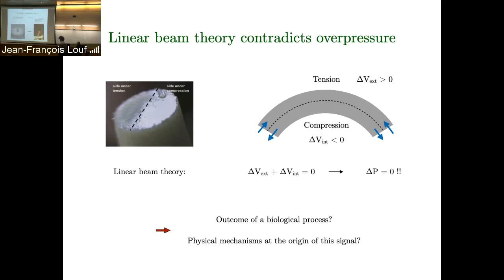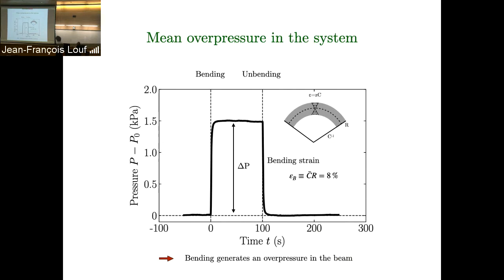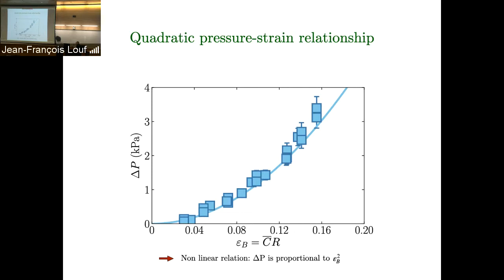A real tree branch is highly complicated — a highly structured material with multiple scales and channels. Our first approximation is a cylindrical beam perforated with longitudinal channels, filled with a Newtonian fluid. We made it of PDMS, so it's transparent and elastic. When we bend this artificial beam, we immediately see an increase in pressure that is steady and then returns to zero when unbent. We define the bending strain epsilon_b as curvature times the radius. Remarkably, this overpressure varies quadratically with the bending strain, which was very surprising.